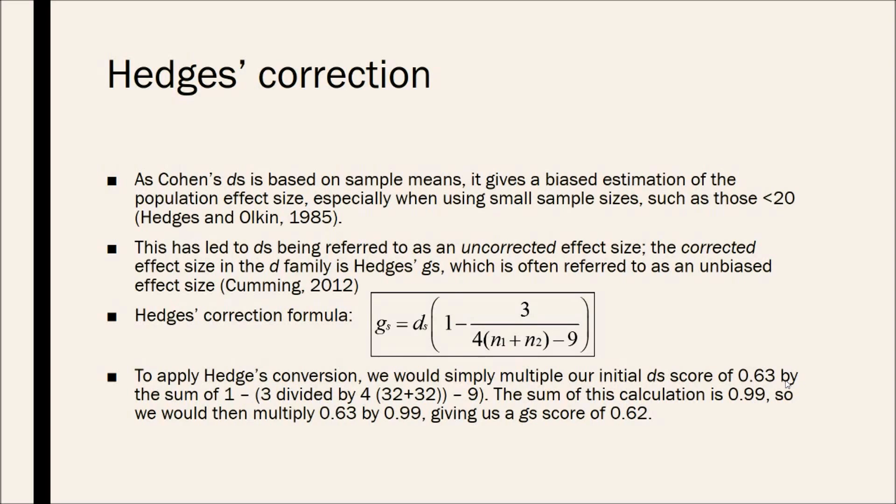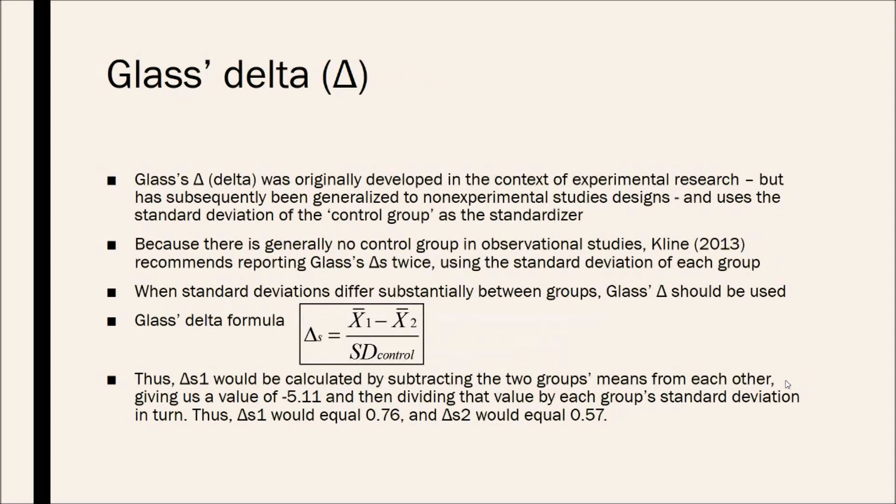There is one more between group effect size index which I'll be talking about, and that is Glass's Delta. Glass's Delta was originally developed in the context of experimental research, but has subsequently been generalized to non-experimental studies, and uses the standard deviation of the control group as a standardizer. But because there is generally no control group in observational studies, Klein recommends using Glass's Delta twice, using the standard deviation of each group. So, when standard deviations differ substantially between groups, Glass's Delta is the preferred effect size to use.